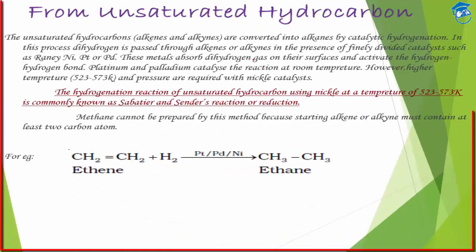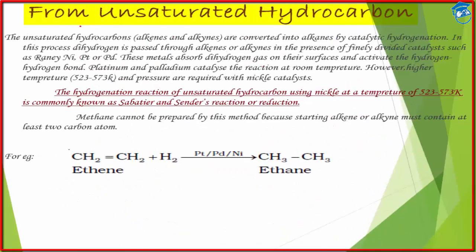First, from unsaturated hydrocarbons — we have to convert the unsaturated hydrocarbon into a saturated hydrocarbon so that we can get an alkane. This method is quite simple and we have to use a catalyst. For example, finely grained powder of nickel, platinum, or palladium is used — finely grained, so we use Raney nickel.